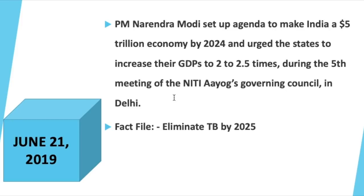Recently there was the Niti Aayog's Governing Council meeting — this was the fifth meeting of the council, which concluded in Delhi. PM Modi made a remarkable statement by setting the agenda to make India a five trillion dollar economy by 2024. Another important development was the agenda to transform the agricultural sector by reforming the Agricultural Produce Marketing Committee as well as the Essential Commodities Act.